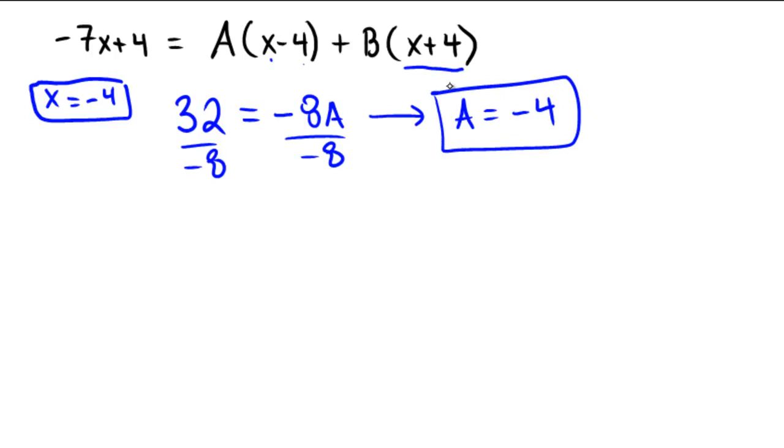Can you on your own think of a different special number we could plug in to make our lives easy here? Can you see it? It would be x equals positive 4, because x equals positive 4 would make this part eliminate and become 0. So that means we would get what on the left? We get negative 28 plus 4, which is negative 24. Then on the right, we would cancel out the A part of it, and we would be left with 4 plus 4, which is 8 times B.